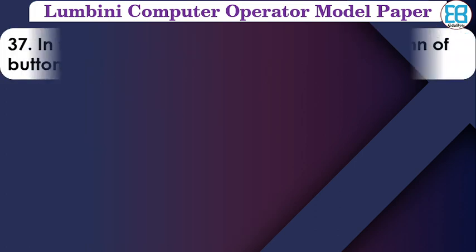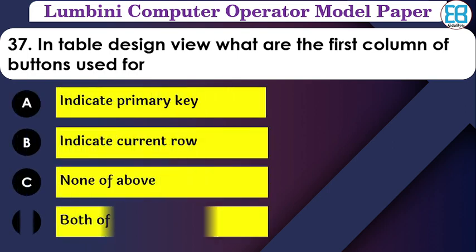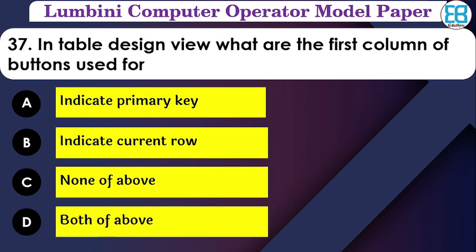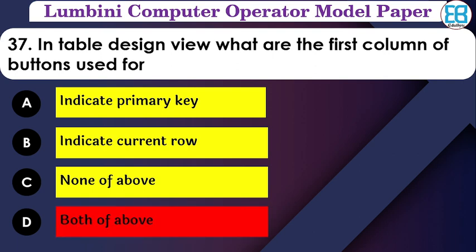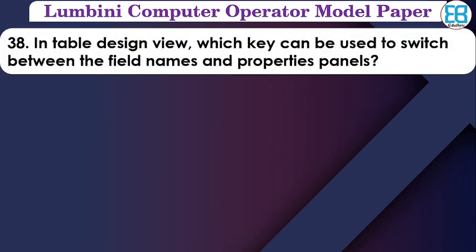In table design view, what are the first column buttons used for? The options are: indicate primary key, indicate current row, none of the above, both of the above. The correct option is both of the above — the first column buttons indicate both the primary key and the current row.